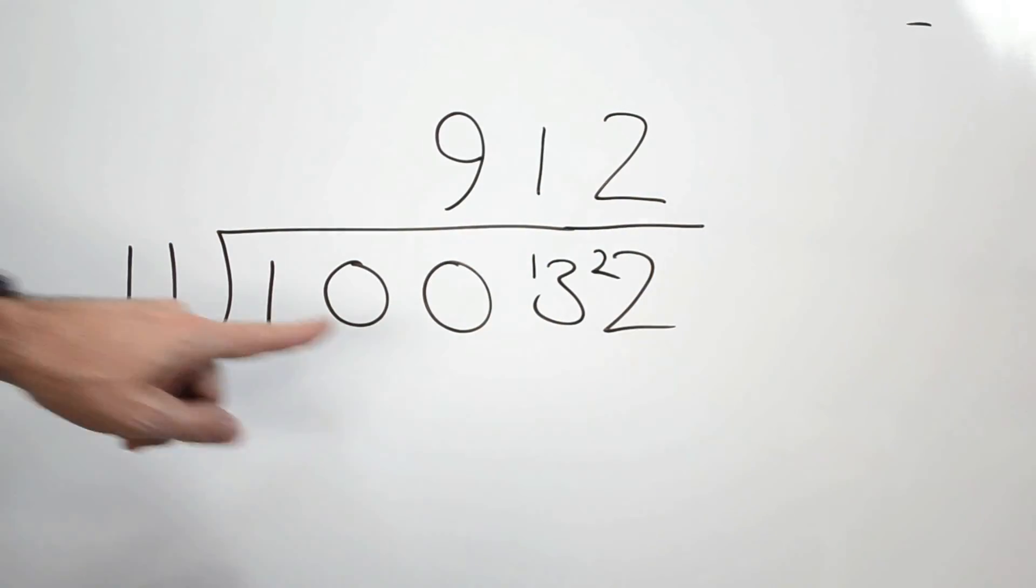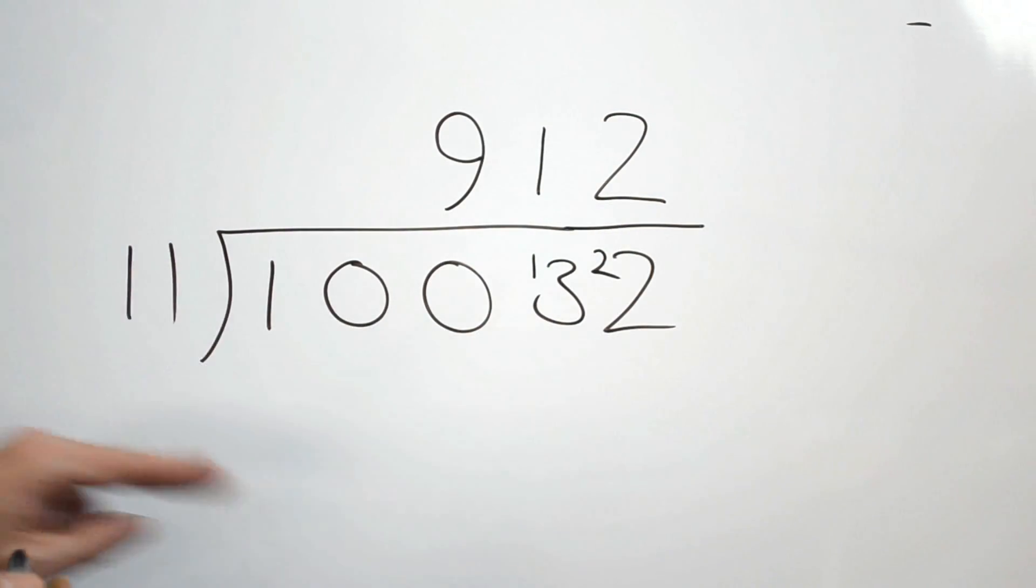So, when we divide 10,032 by 11, we get 912. Nice and easy? Yep.